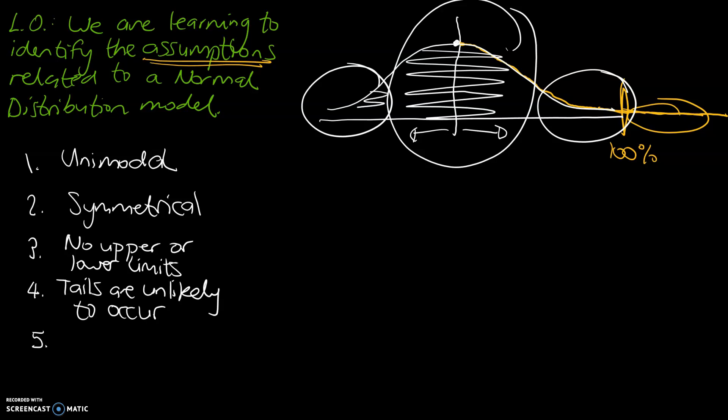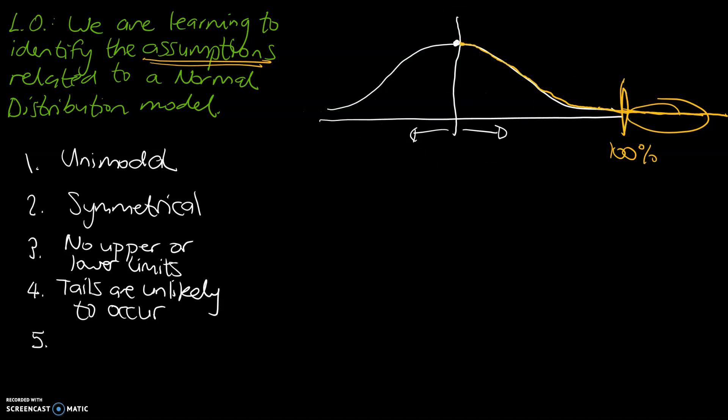And you'd expect relatively few bits of data to fall within the tails. So that means if your tails are not unlikely to occur, maybe another model is more appropriate.